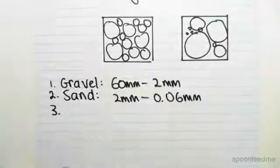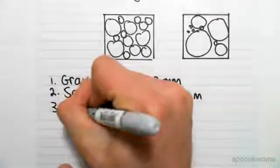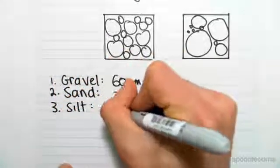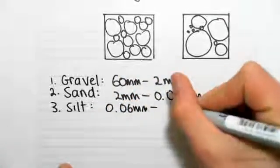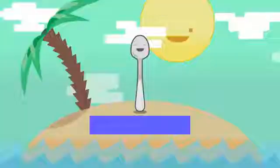We then have silt, which has particle sizes from 0.06mm to 0.002mm.